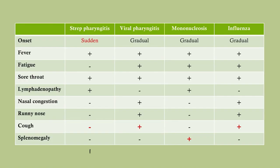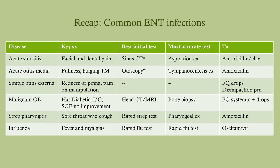Here is a comparison chart: strep pharyngitis, viral pharyngitis, mononucleosis, and influenza side by side. One final important point: a patient with flu-like symptoms including sore throat and lymphadenopathy — especially a young man — should also be evaluated for acute HIV infection, which is notoriously similar to influenza. Here's a recap cheat sheet you can print out if you wish.